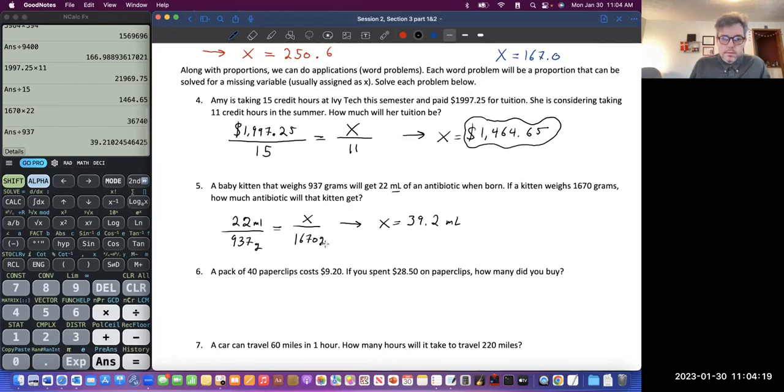Let's round to the 10th. 39.2 milliliters. So that was if it was proportional. This was milliliters. This was grams. This was grams. So it gave me, by doing that cross multiplication, it gave me the amount of milliliters. Hopefully it makes sense how I'm doing that.